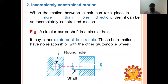In incompletely constrained motion, the motion between the pairs can take place in more than one direction. Example: a circular bar in a circular hole allows both rotary motion and reciprocating motion.